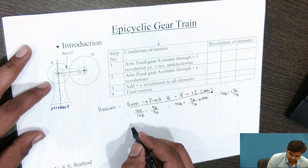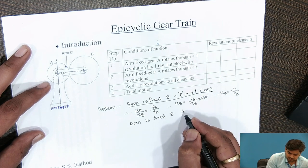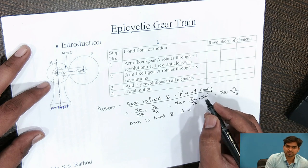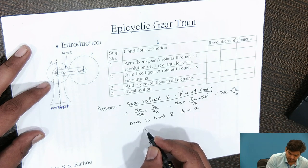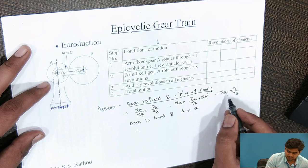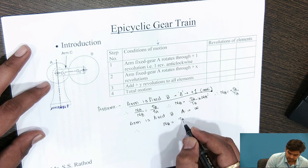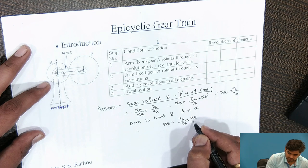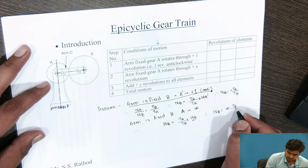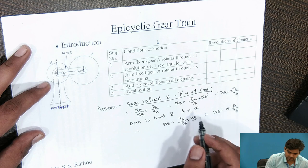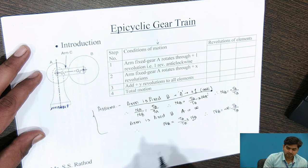The next condition is: arm is fixed and instead of plus 1, consider that gear A makes X rotations in the anticlockwise direction. We can easily find out that as gear A makes X rotations instead of 1, NB is equal to TA by TB into NA, where NA equals X. Therefore, NB equals minus X into TA by TB, since A rotates anticlockwise and B rotates clockwise. These are the two main basic conditions of motion.